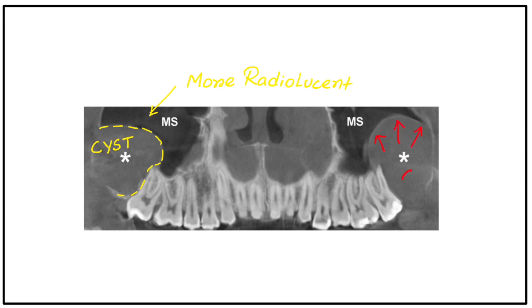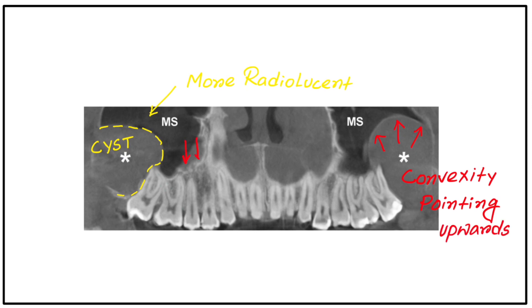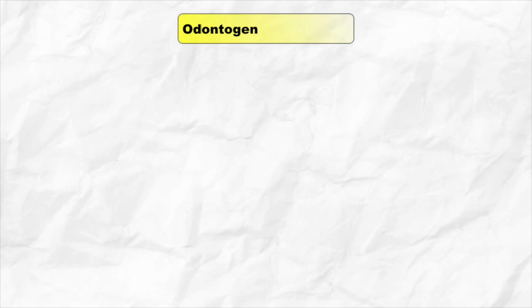Then look for the cortical outline. The cortical outline of the cyst has convexity pointing upwards. However, the cortical outline of the maxillary sinus is pointing downwards.